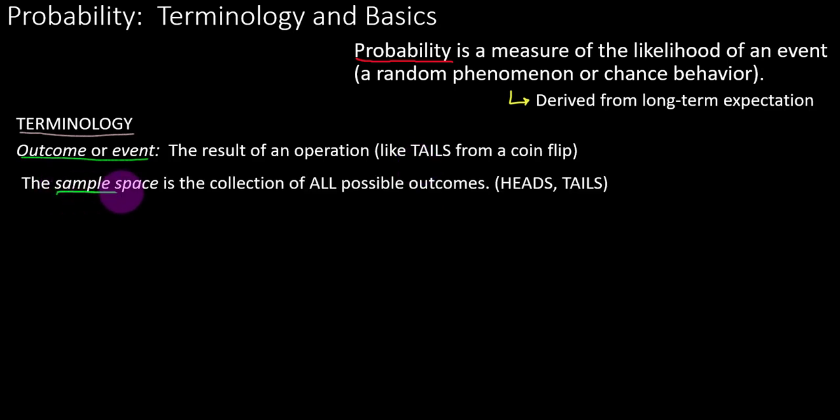The sample space would be all of the possible outcomes in a particular scenario. In the coin flip example, all the outcomes would be heads then tails. There's only two possible outcomes there on earth.